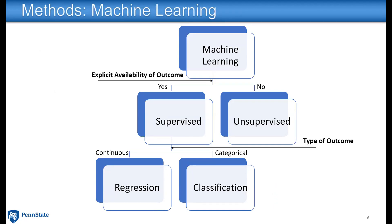What is machine learning? Machine learning is learning about data without explicitly programming. Depending upon whether you have explicit availability of an outcome or not, your methods can be classified as supervised learning or unsupervised learning. If you have outcome availability, whether that outcome is continuous or categorical will classify methods into regression or classification. The model that we built uses both regression and classification techniques.